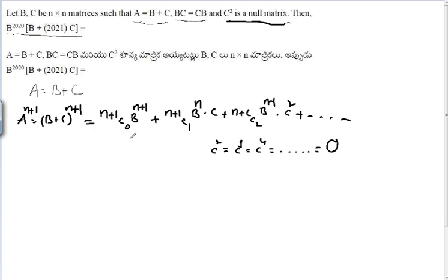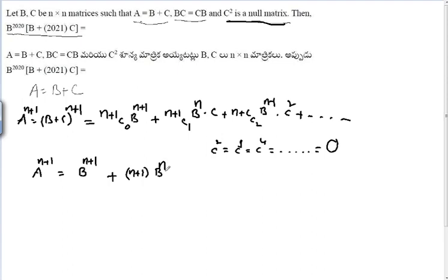Therefore, from the third term onward all values are zero. So A^(n+1) = (n+1)C₀ · B^(n+1) + (n+1)C₁ · B^n · C = B^(n+1) + (n+1) · B^n · C.